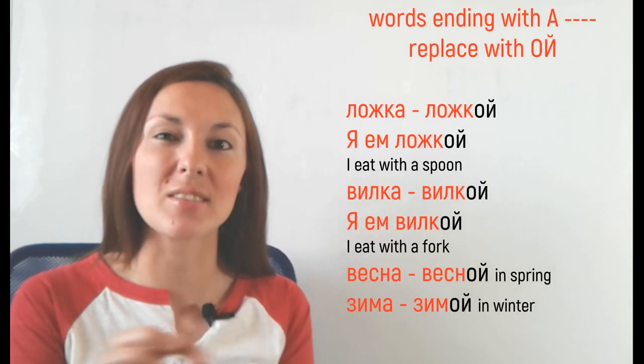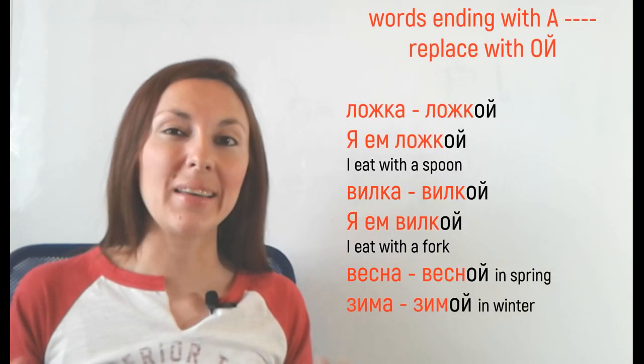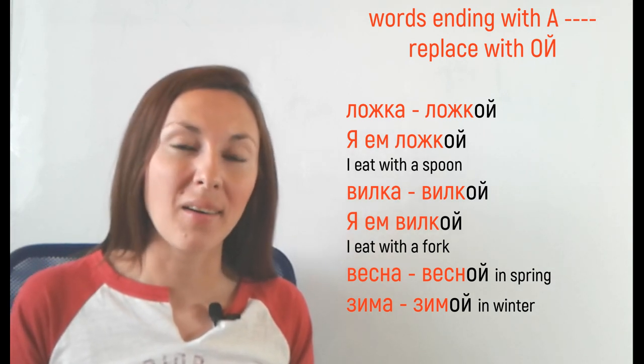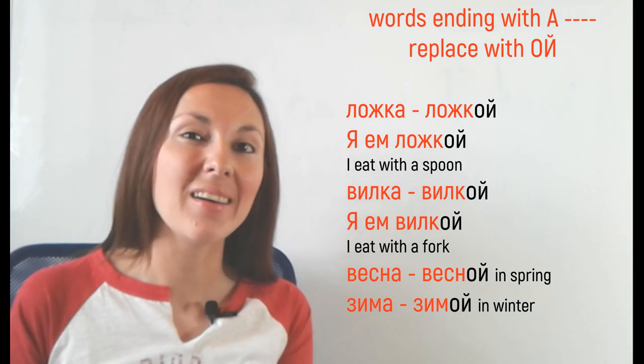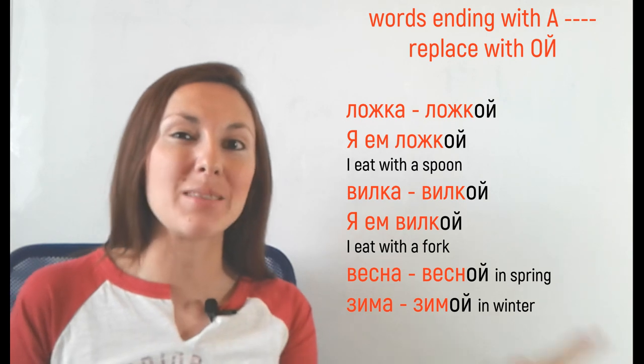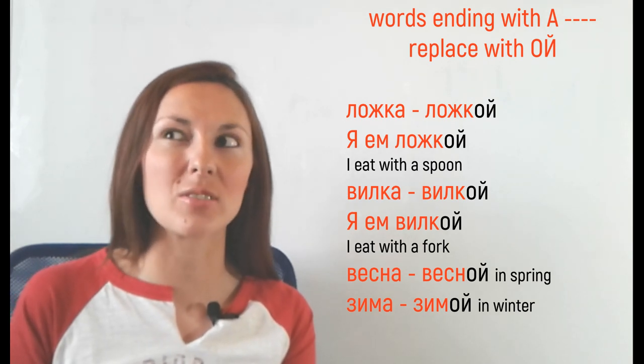For words that end with a consonant or a letter О, yes, we add ОМ. But not all Russian words end with this letter. If our word ends with the letter А, we change it into ОЙ. For example, Я ЕМ ЛОЖКОЙ or Я ЕМ ВИЛКОЙ. Or ВЕСНА is spring. ВЕСНОЙ will be in spring. ЗИМА, winter. How to say in winter? ЗИМОЙ.